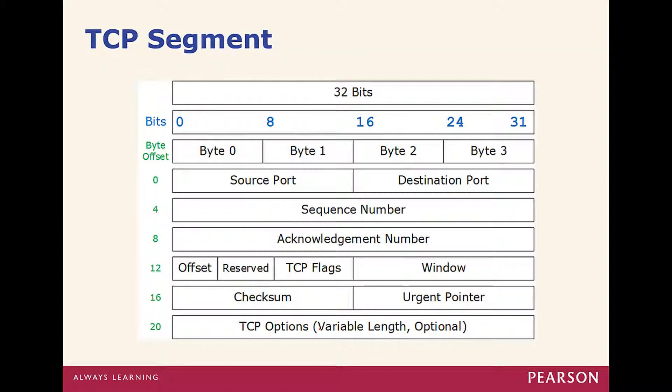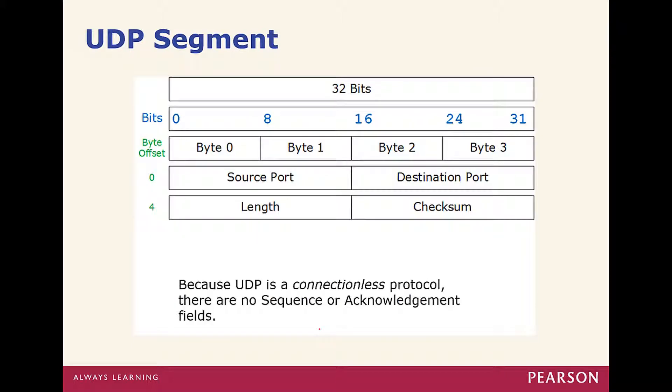Here's the TCP segment header — similar structure with source port, destination port, sequence numbers, acknowledgements, offset, reserved, window size, and checksum. The UDP header is simpler: just source port, destination port, length, and checksum. Notice there's no sequence number and no acknowledgement — because UDP is connectionless.